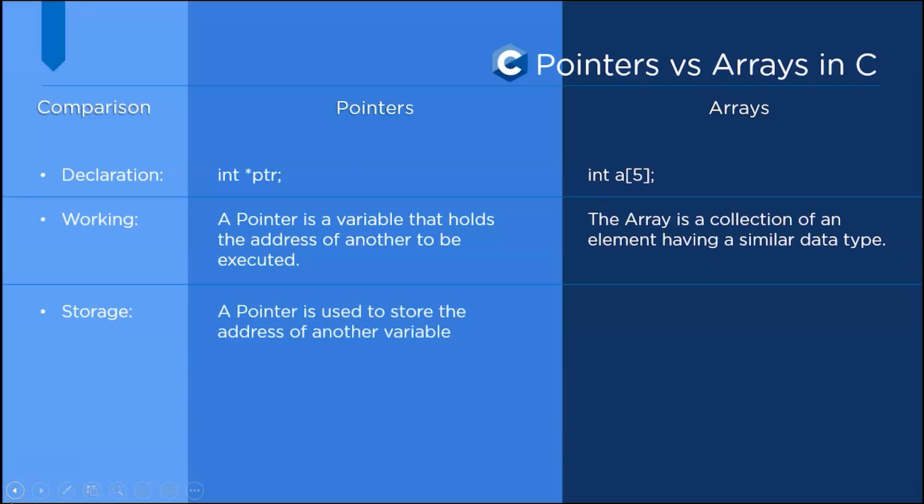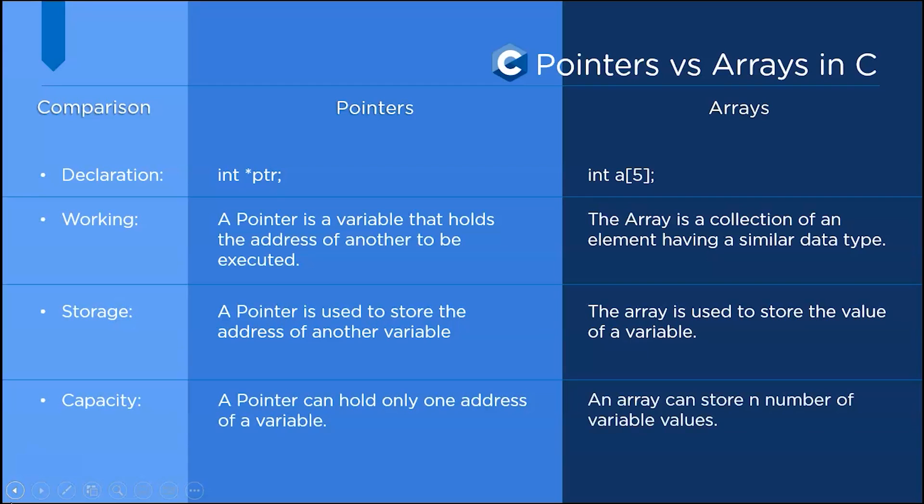And for storage, a pointer is used to store the address of another variable, whereas the array is used to store the value of a variable. Basically in pointers it only holds the address of a variable, but in arrays it holds the value of a variable. Coming to the capacity, a pointer can hold only one address of a variable, whereas an array can hold or store n number of variable values.